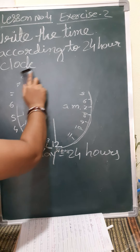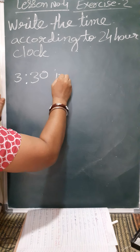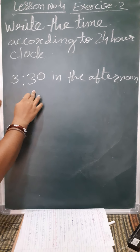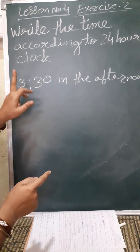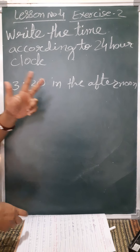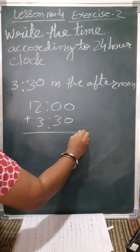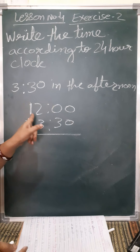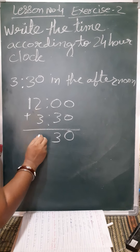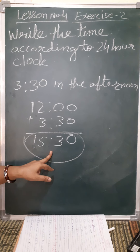Now I will give some examples. 3:30 in the afternoon — how will we read it? Afternoon means after 12. So 12 o'clock 24-hour time starts. After 12, till 3: 12 means 13, 14, 15. So 12 plus 3 — we will add 12 to this time. 3:30 means 0 plus 3 is 3, 2 plus 3 is 5. So what time is it? 15:30. It is read as 15:30 in 24-hour clock.